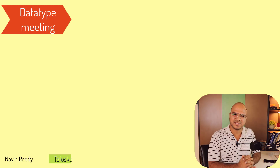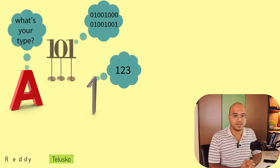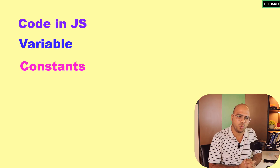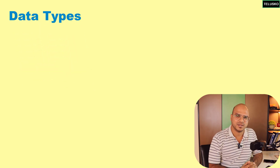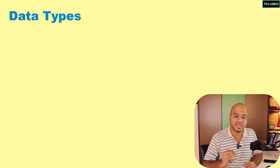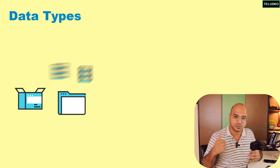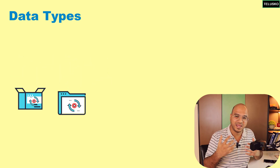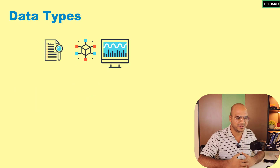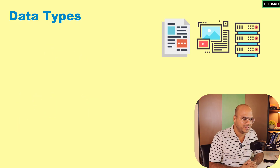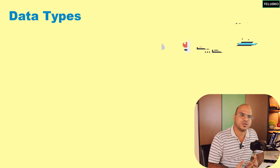Welcome back! My name is Davin Reddy and let's continue this series on JavaScript. In the earlier videos we talked about how to write JavaScript code, how to write variables, how to work with constants. Now it's time to understand one of the most important concepts in a language: data types. The most important thing in any software is data, because most applications are built to store it, process it, and make something meaningful out of it.